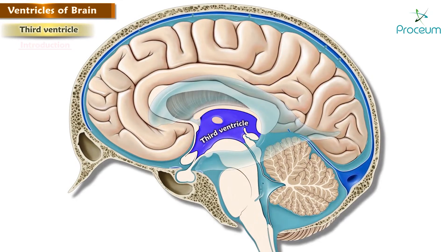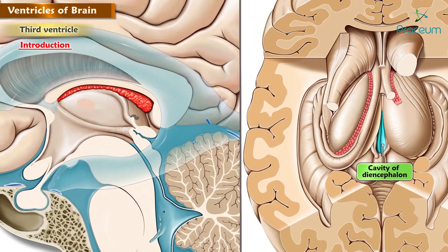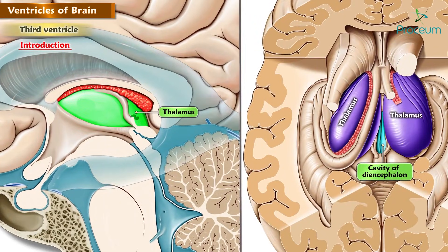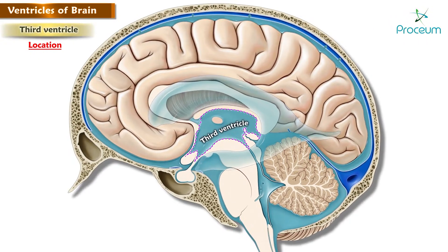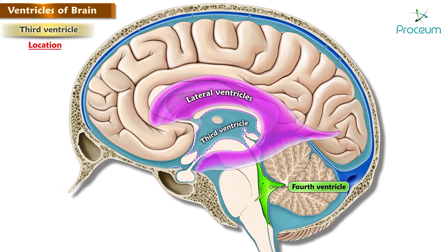The third ventricle is a cavity of the diencephalon, which is a slit-like gap between the two thalami and the hypothalamus. It is located between the two thalami. The third ventricle serves as the intermediary between the lateral ventricles and the fourth ventricle, because it receives CSF from the lateral ventricles and conveys it to the fourth ventricle.